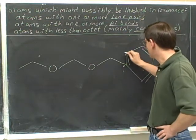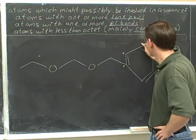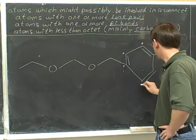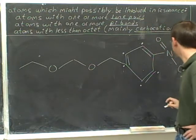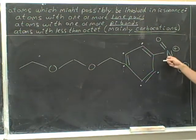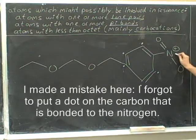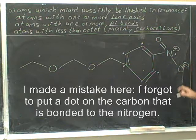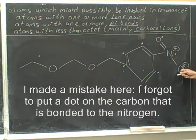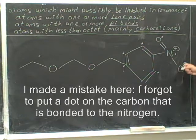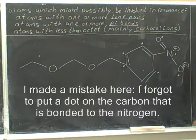Now this atom has a pi bond — it gets a dot. Pi bond, dot; pi bond, dot; pi bond, dot. This nitrogen has a pi bond, it gets a dot. This oxygen has a pi bond, it gets a dot. Now this oxygen has a negative charge — it's got lots of lone pairs; it actually has three. So it gets a dot.